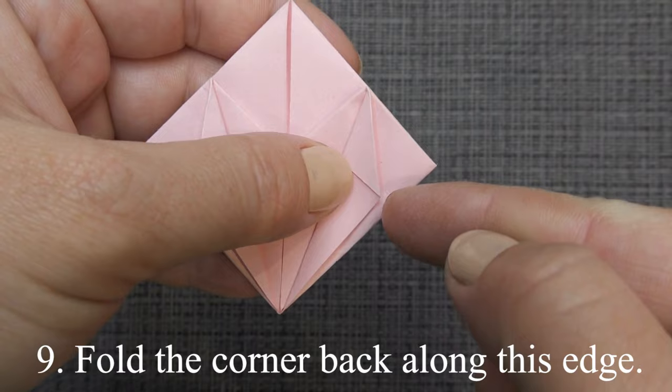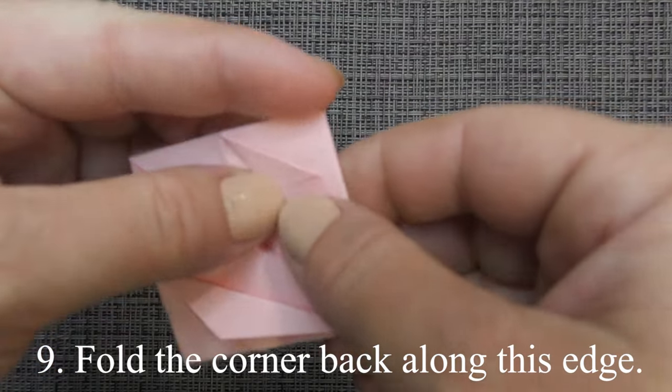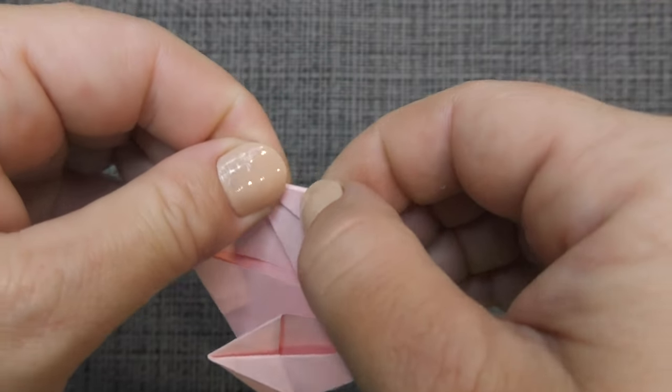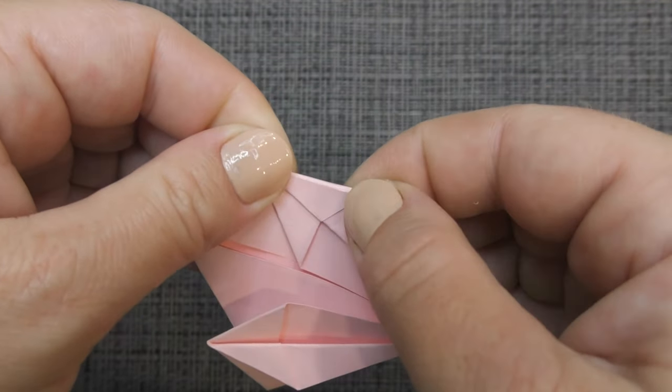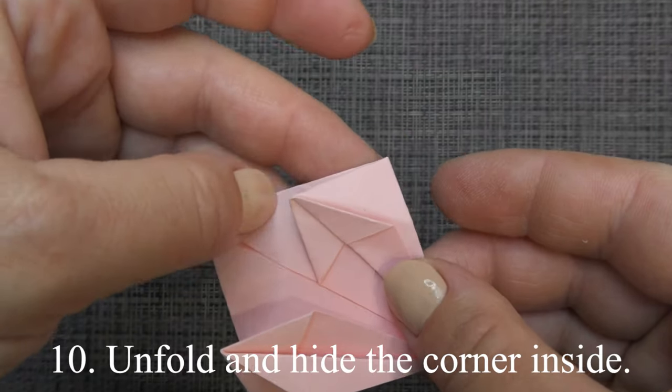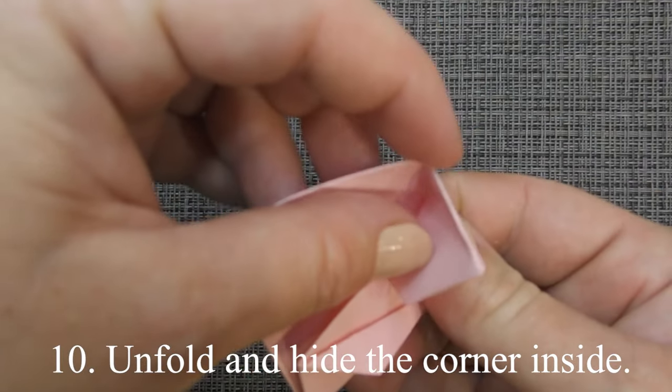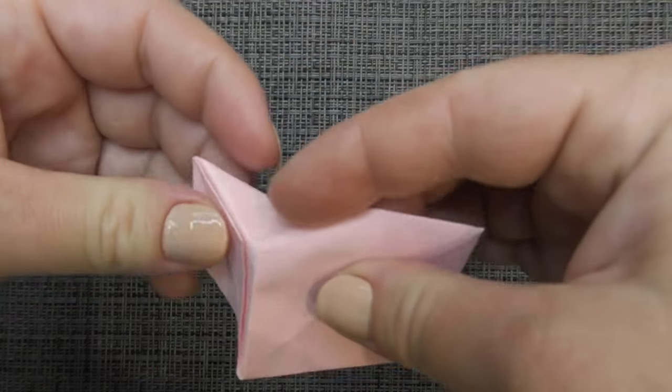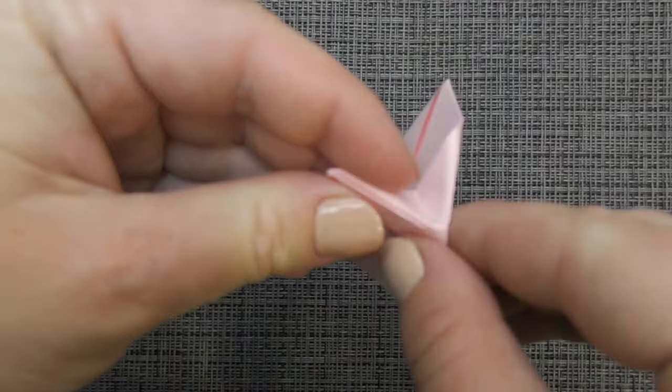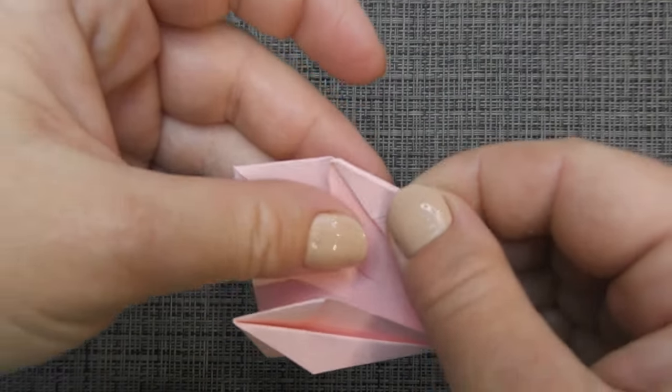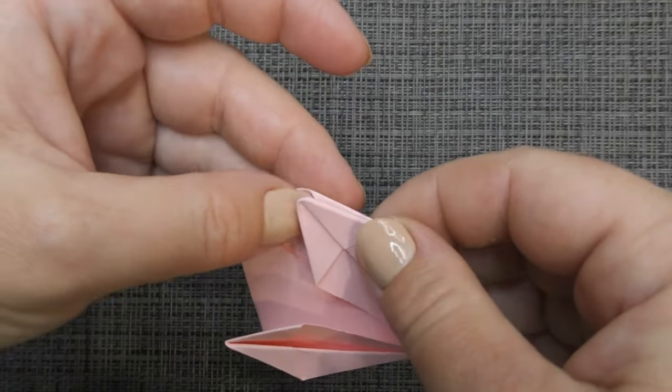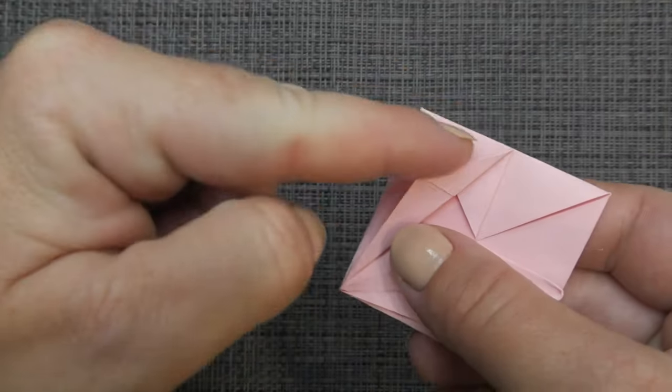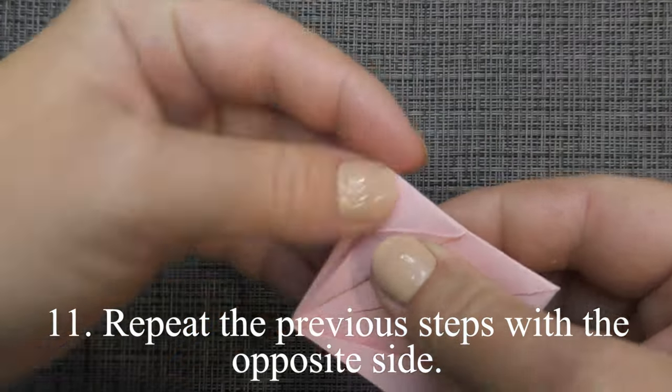Fold the corner back along this edge. Unfold and hide the corner inside. Repeat the previous step with the opposite side.